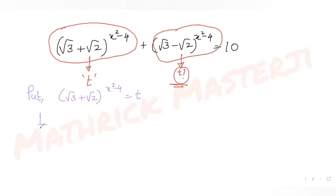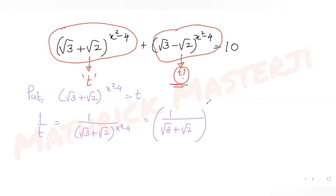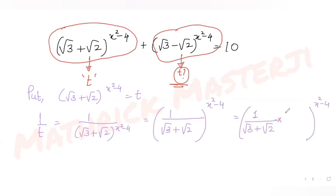1/t = 1 / (√3 + √2)^(x²−4). To simplify the denominator containing surds, we rationalize by multiplying numerator and denominator by the conjugate, which is (√3 − √2). This gives us (√3 − √2) in the numerator, and in the denominator we get the form (a+b)(a−b) = a²−b².